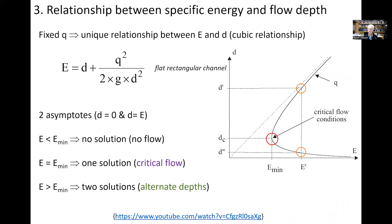When the specific energy is less than the minimum specific energy, there is no solution — this could be a situation where the water depth is below the crest elevation of a spillway and there is no flow. When specific energy equals the minimum, we have one solution: critical flow condition. For larger specific energy, we have two possible flow depths. The minimum specific energy corresponds to critical flow condition, and the water depth at that point is called the critical flow depth.